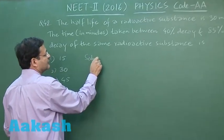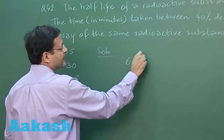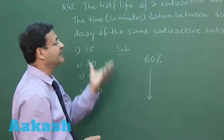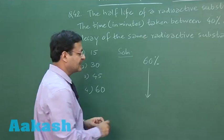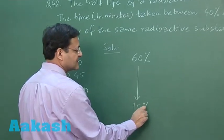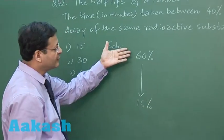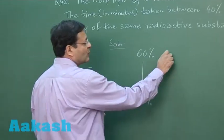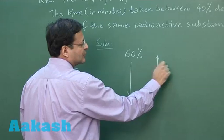From here you have to switch over to 85 percent decay. If it is 85 percent decay, then what is left over? That is 15 percent. Now if you have to move from 60 percent to 15 percent left over, then after one half-life you will be reaching 30 percent, and another half-life you will be reaching 15 percent.